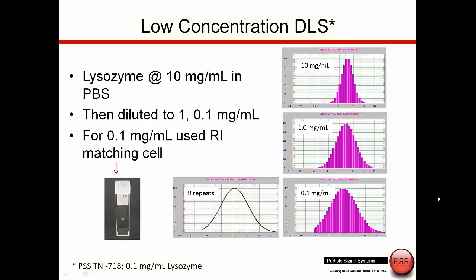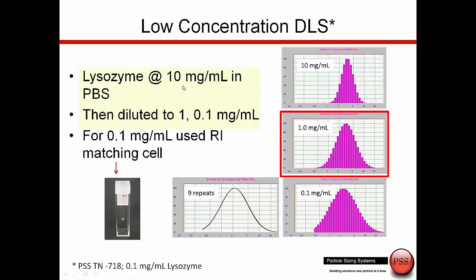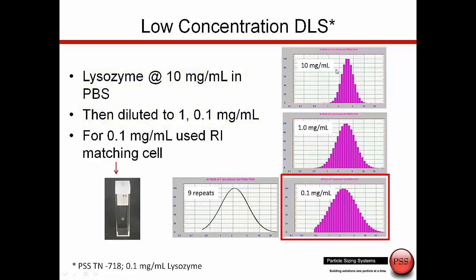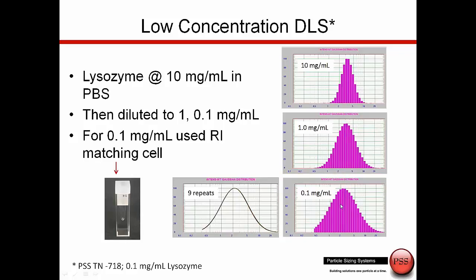I recently put out a technical note showing off the low-level concentration abilities of the NICOMP. I was taking lysozyme, which is a protein with a known size near 3.5 nanometers, and mixed it up at 10 mg/mL, then diluted to 1 mg/mL and down to 0.1 mg/mL. This showed how we get the same size — with a little broadening — and the ability to measure at very low concentrations for this very small, weak-scattering protein.